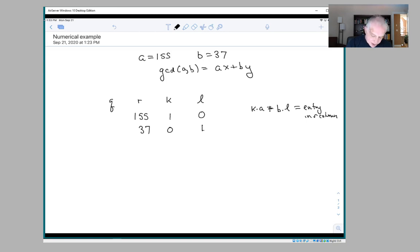Now what is Q? Q is the quotient. So you take 155 and divide it by 37 and you take the quotient, which is 4. 37 goes into 155 four times. And then you take 155 minus 4 times 37, which is going to be the remainder when you divide 155 by 37, and that's 7.